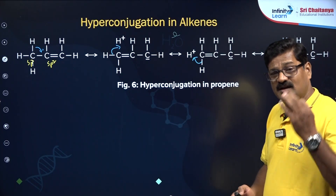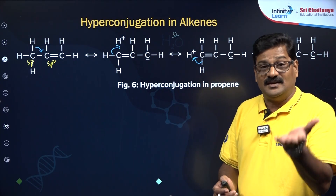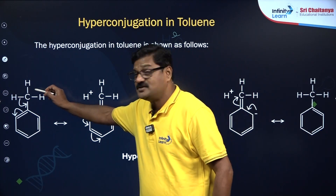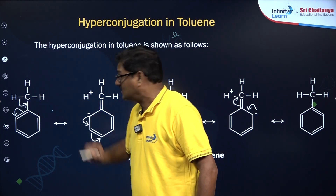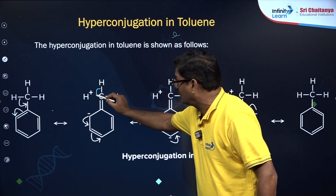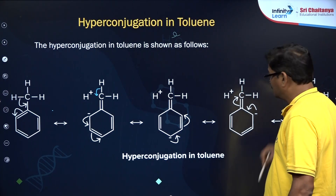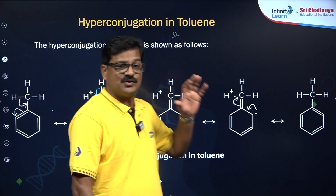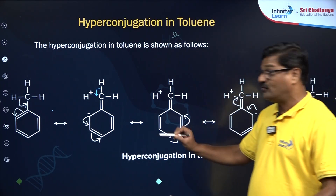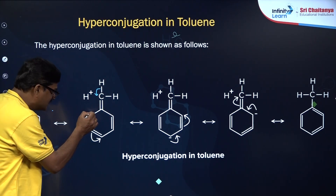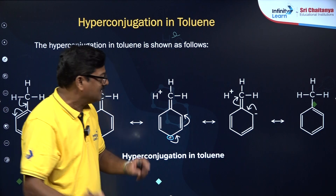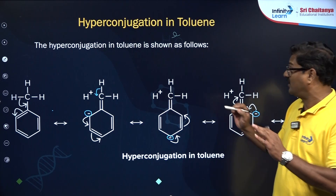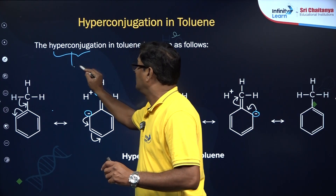Hyperconjugation in toluene is actually what is called the Baker-Nathan effect. In methyl benzene (toluene), the hydrogen gives its sigma bond which becomes a pi bond, giving various resonance structures. Because of this hyperconjugation, a negative charge is observed on the benzene ring at the ortho and para positions, which activates the toluene ring.